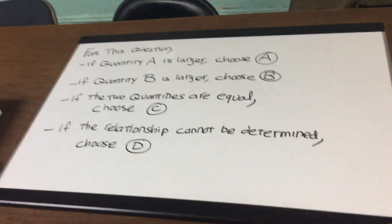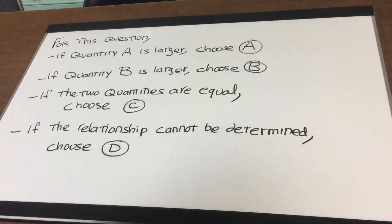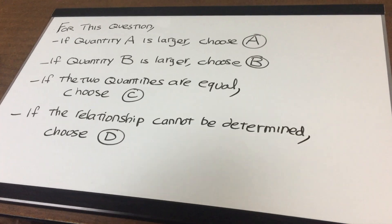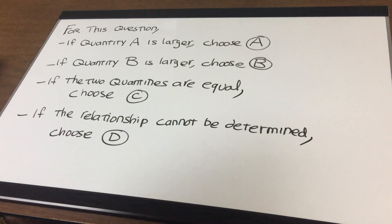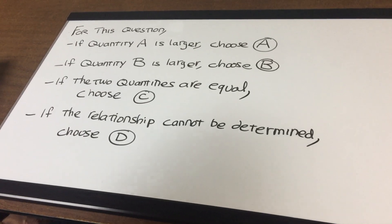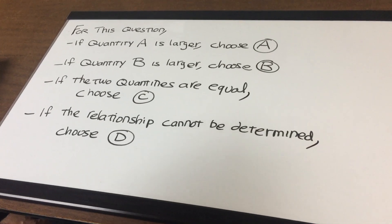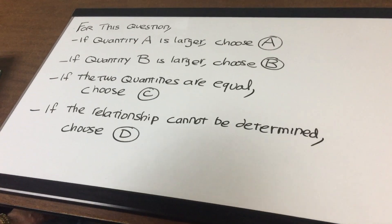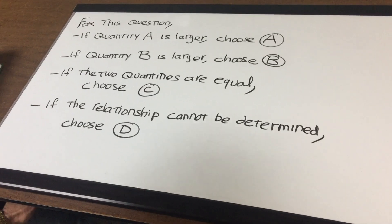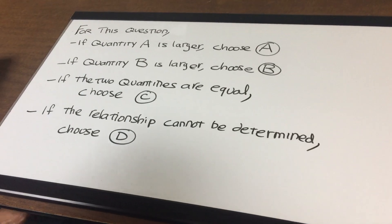For this question, we're going to choose A if quantity A is larger, choose B if quantity B is larger, choose C if the two quantities are equal, and choose D if the relationship cannot be determined.